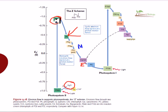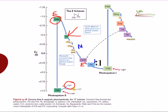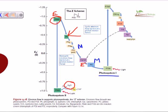The P680 complex is also an embedded system. From the cytochrome bf complex, the electron must be carried by another mobile carrier — plastocyanin. Plastocyanin carries the electron from the cytochrome bf complex and brings it to photosystem I, which is also embedded in the membrane.